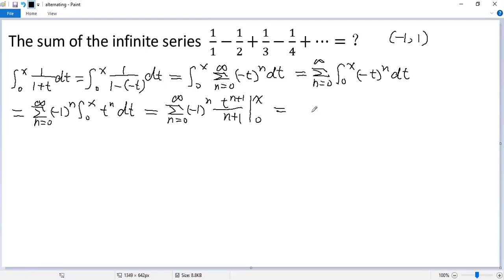When t equals x, so we get sigma n equals 0 to infinity, negative 1 to the power n, and the top will be x to the power n plus 1 over n plus 1. When t equals 0, the whole term is 0.